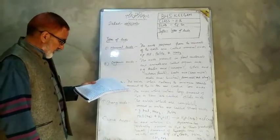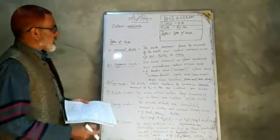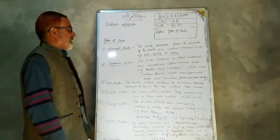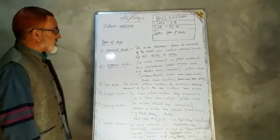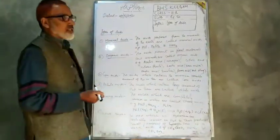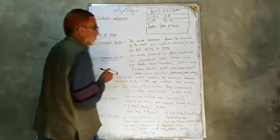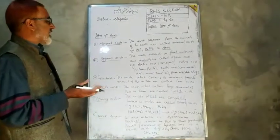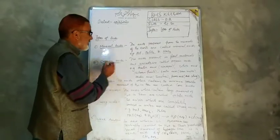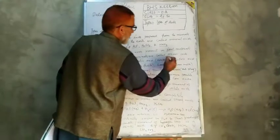Organic acids are the acids present in plant materials and animals. The acids found in plant materials and animals are called organic acids.